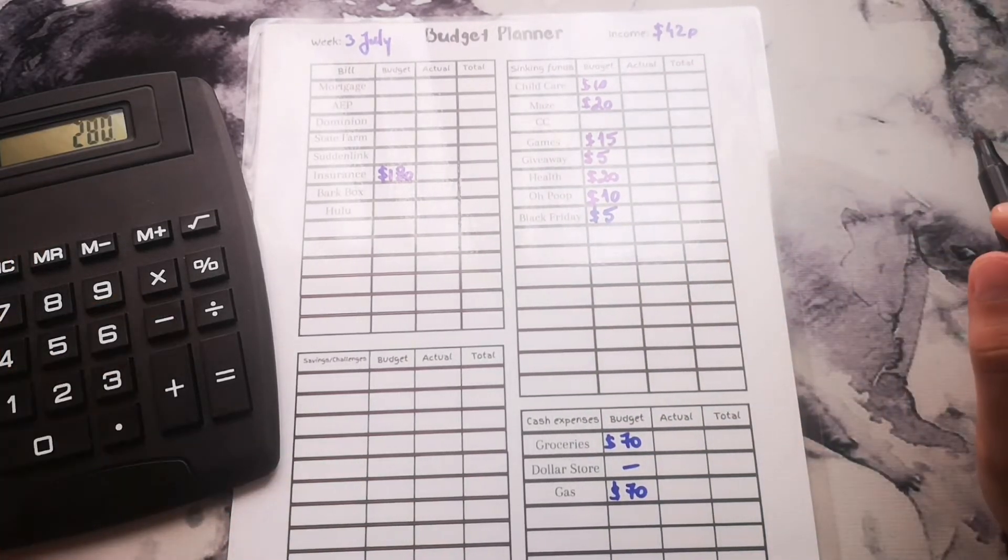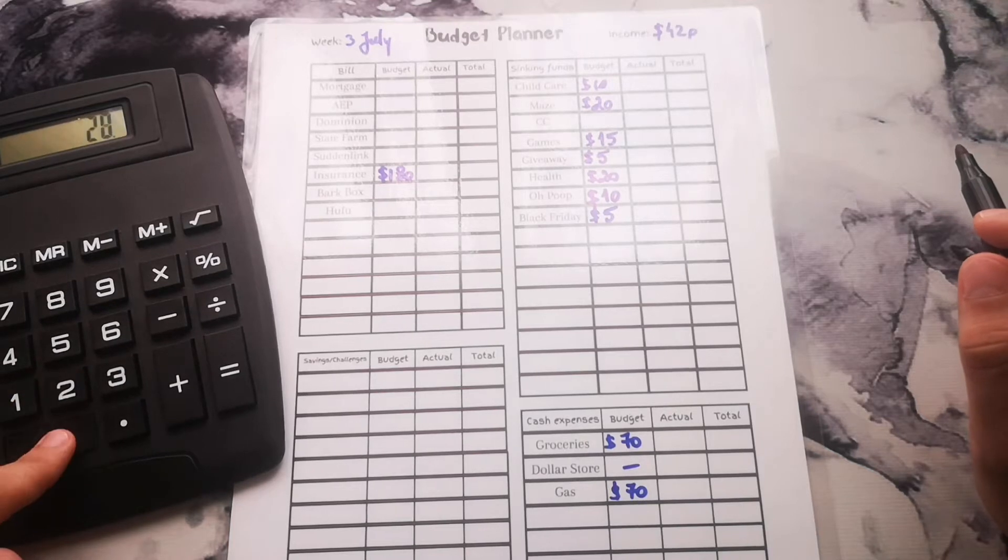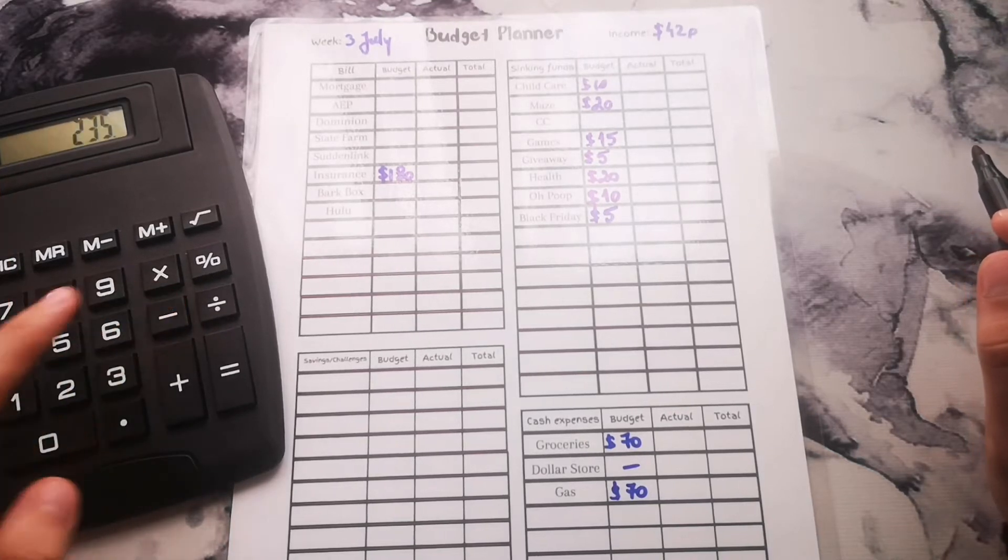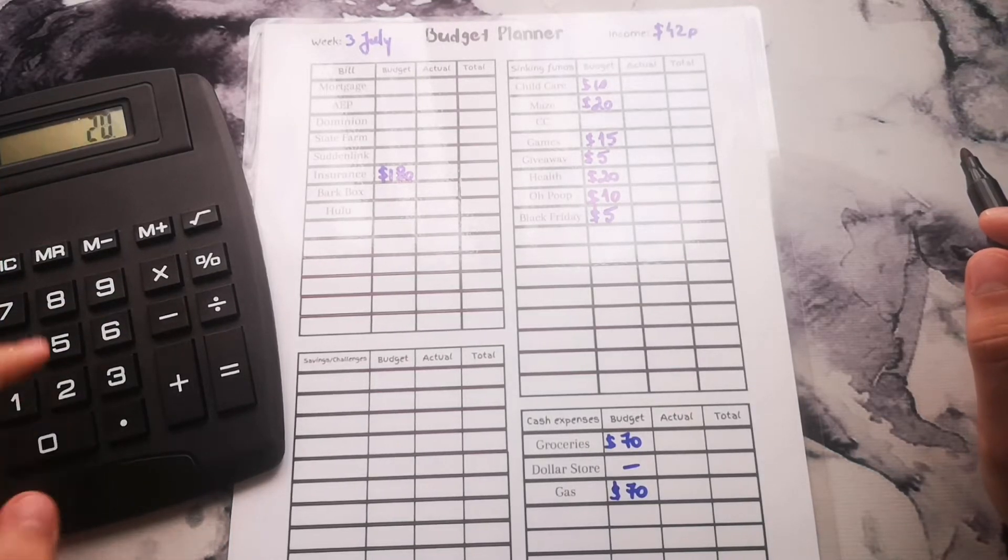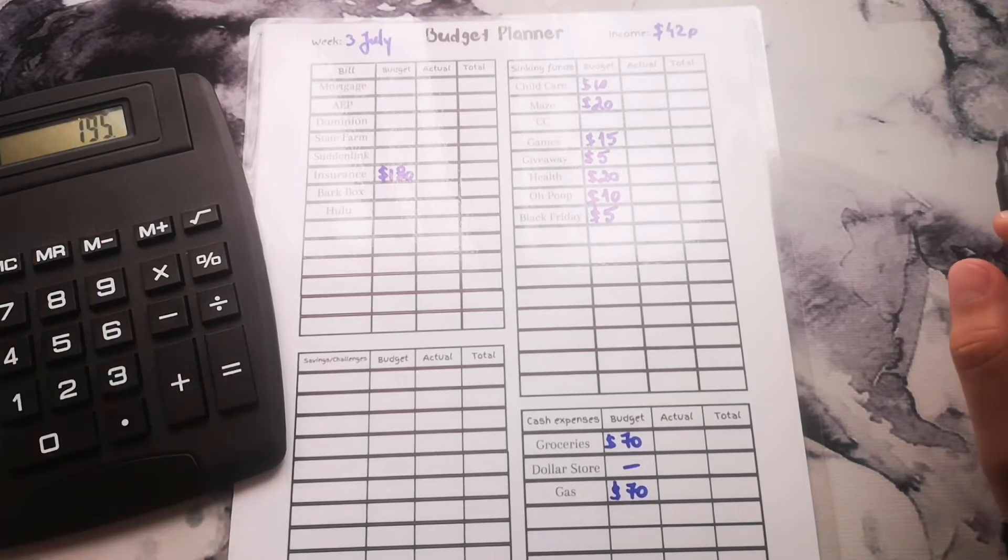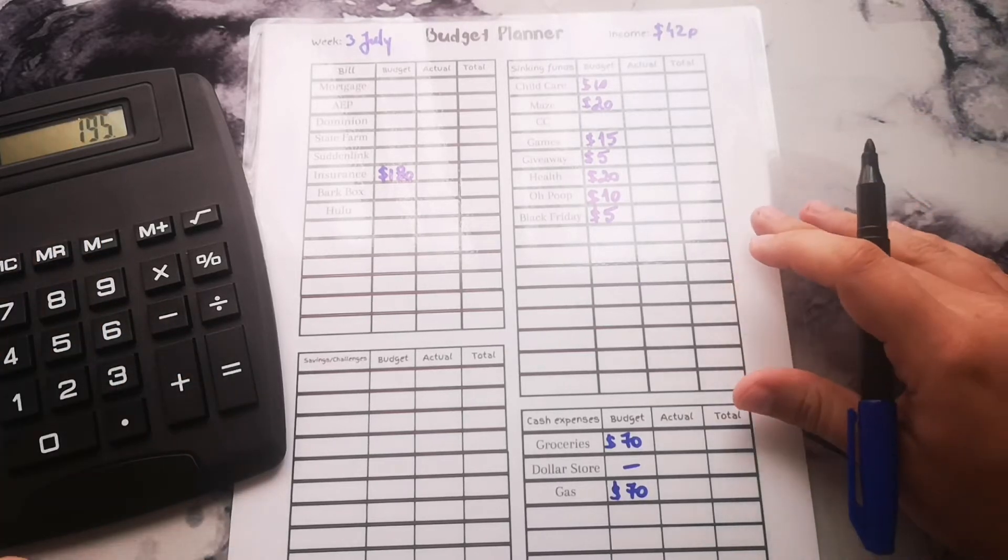Let's see what we got. We got $10, $20, $15, $5, $20, $10, and $5, so $195 left.